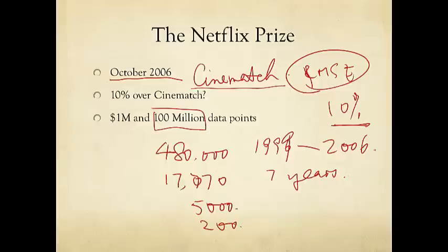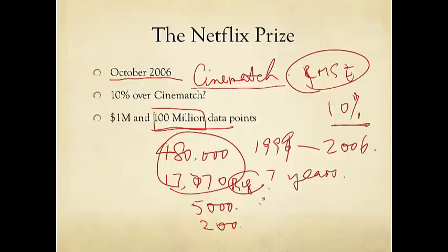This is a huge data set, and it's all real data. Of course, it's anonymized — there was some controversy about how well privacy was protected, but that's outside the scope today. So it's big data. It's also sparse data, because only about 1% of the total number of possible ratings were actually known. If you multiply the number of movies by the number of users, you can see this is actually a small fraction.